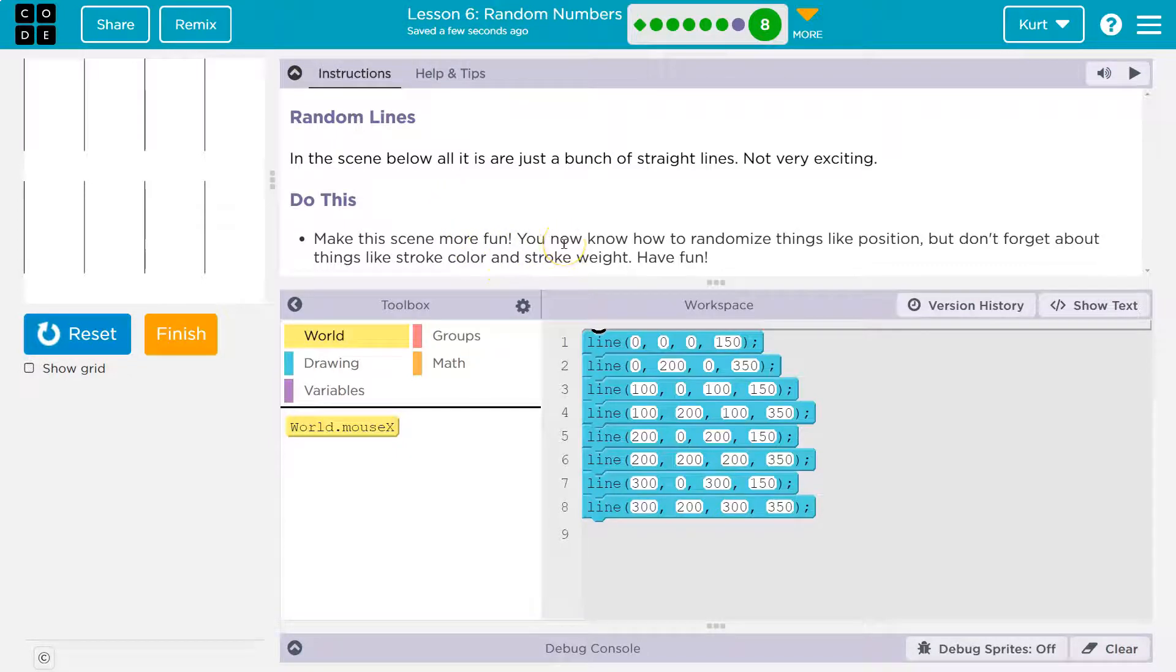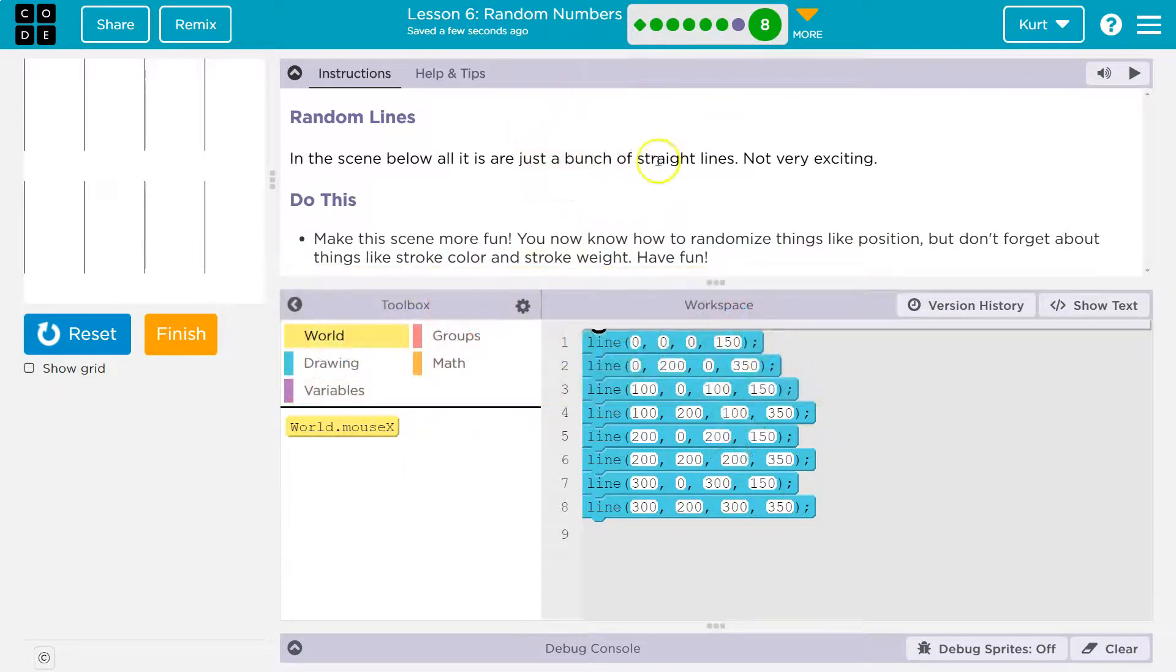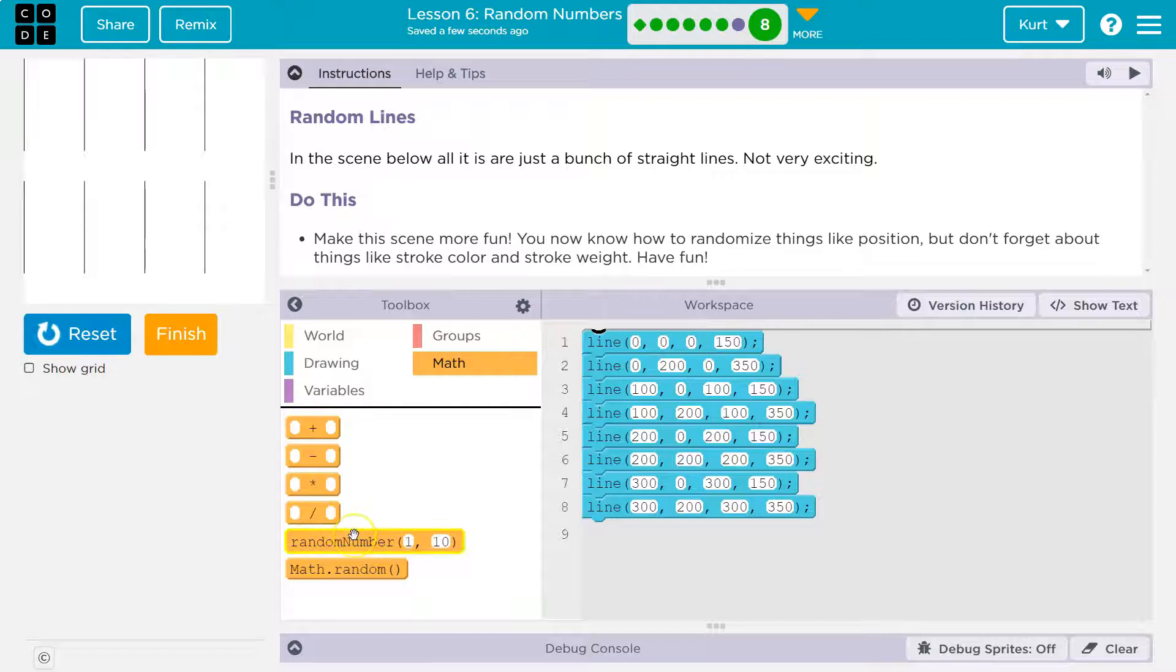Make this scene more fun. You now know how to randomize things like position, but don't forget about things like stroke color and stroke weight. Have fun. Okay, cool. So randomize the lines. All right, let's start with a random number.